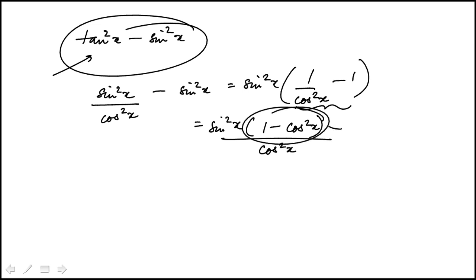Now 1 minus cosine square x is sine square x. That comes from the Pythagorean identity for sine and cosine as trigonometric functions. So I have sine square x times sine square x over cosine square x.